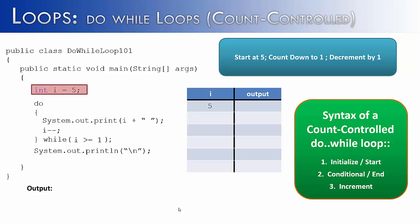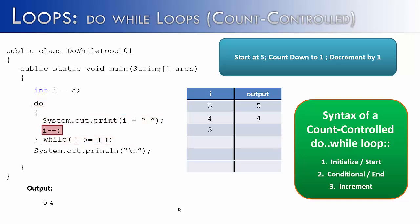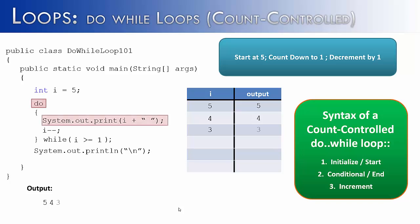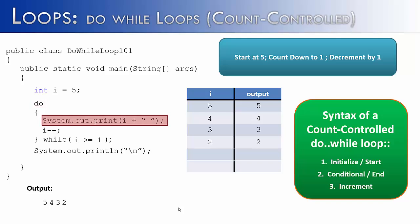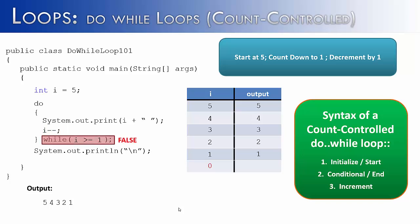As we run this loop, i starts at 5, goes to the do statement, and automatically enters. It prints i, which is 5. i-- changes i to 4. Checks the condition — 4 is greater than or equal to 1, true — prints out 4. i becomes 3, the while statement is true, goes to the do, prints out 3. i becomes 2, checks condition — true — prints out 2. i-- makes i 1, i is greater than or equal to 1, goes to the do, prints out 1. i decrements to 0, the condition is no longer true, and the loop is finished.